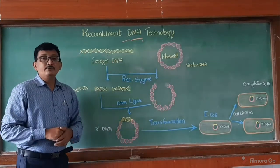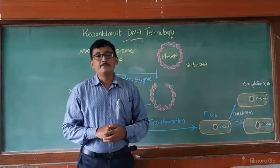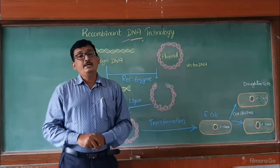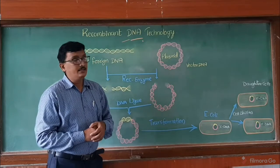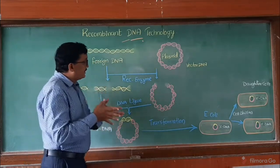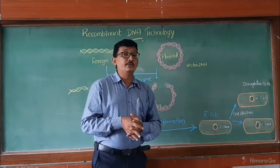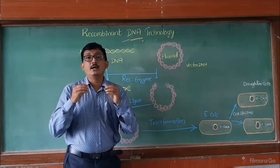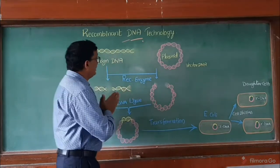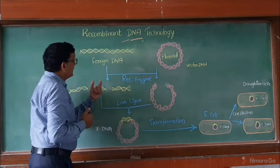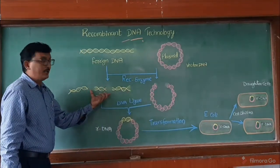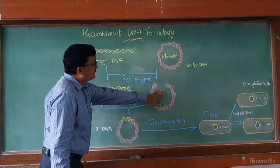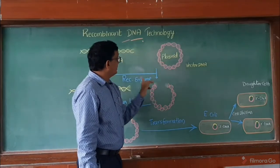What we are doing is treating both with the same restriction enzymes. What are restriction enzymes? The restriction enzymes are called molecular scissors or chemical knives. They cut the DNA at specific points. Whenever we use specific restriction endonucleases, these DNAs are cut into fragments and they have sticky ends. After treating with restriction enzymes, this is the desired gene — the foreign gene or gene of interest — and the plasmid also gets opened whenever treated with restriction enzymes.